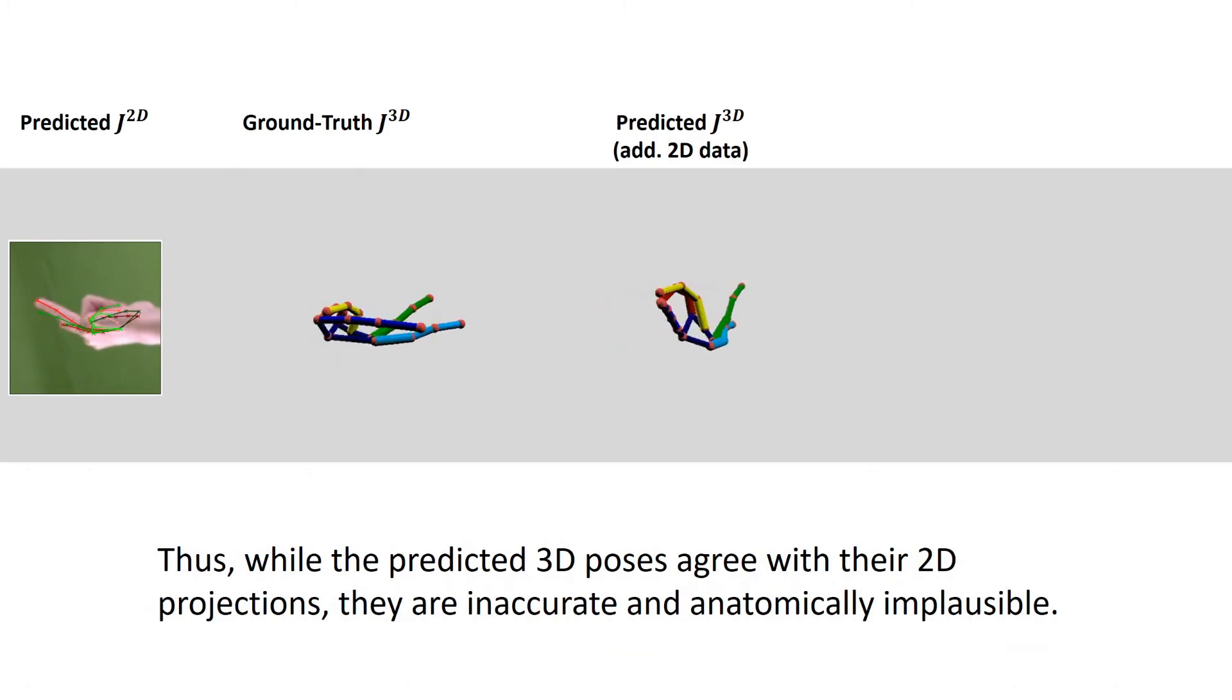Thus, while the predicted 3D poses shown in the middle agree with the 2D projections shown on the left, they are inaccurate and anatomically implausible.